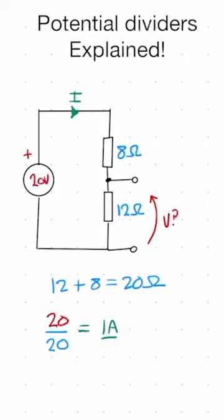The final step to calculate the output voltage, V output, we simply need to multiply the current flowing through the resistor, 1 amp, by the resistance of interest, 12 ohms, which gives us 12 volts.